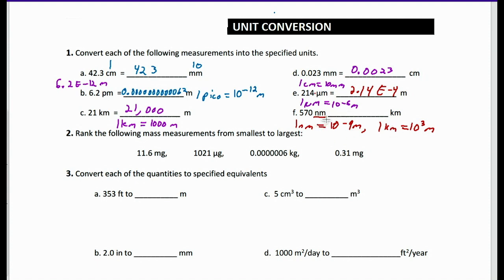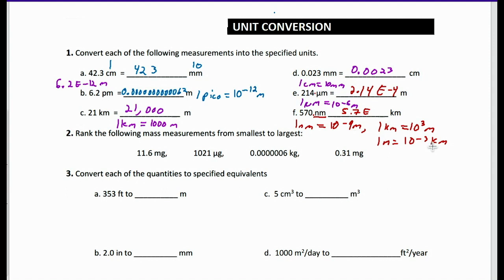To figure this out, I would do 570 times 10 to the negative 9th in order to get to meters, but then I need meters into kilometers. One meter is equivalent to 10 to the negative 3rd kilometers. So 570 times 10 to the negative 9th times 10 to the negative 3rd. We slide the decimal over two spots to get 5.7, and then the exponent is negative 9 plus negative 3, which is negative 12, but we slid it over two spots, so it's 5.7 × 10 to the negative 10th.